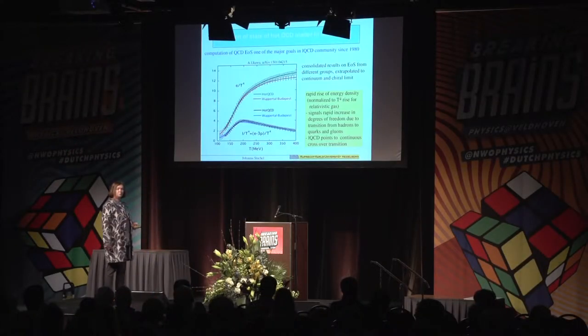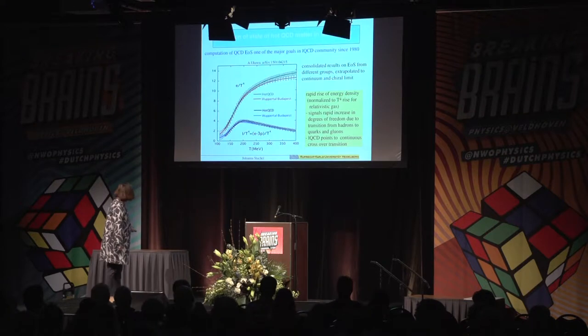At low temperature and normal density we have the hadronic world — the world we live in. At high temperature and high density, quarks and gluons are liberated from confinement, forming the quark-gluon plasma — a state conjectured in 1975 by two different groups. This is the state that existed in the early universe on a timescale of 10⁻¹² to 10⁻⁵ seconds, and that shall be the topic of my talk.